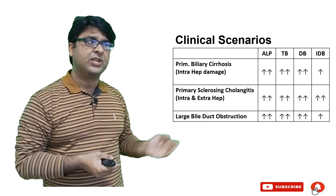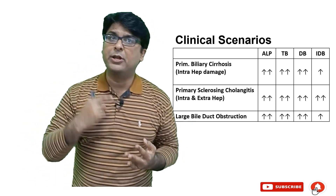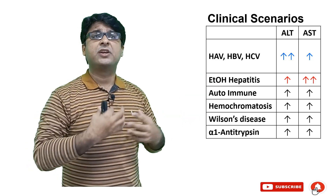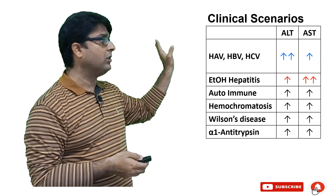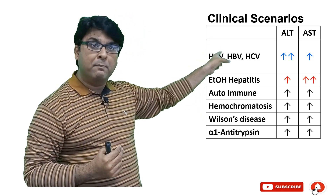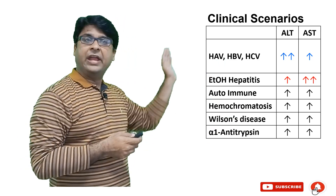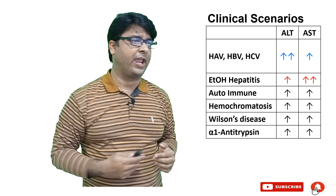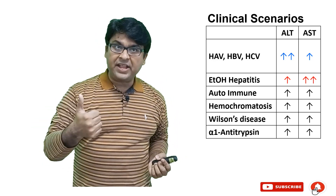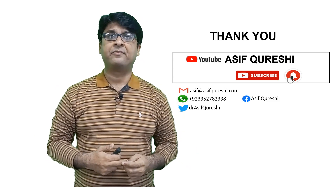In primary sclerosing cholangitis, there is blockage of both intrahepatic and extrahepatic ducts with large bile duct obstruction. Again: alkaline phosphatase will go up, total bilirubin will go up, direct bilirubin will go up, and indirect bilirubin will go up as well. For hepatocellular damage — in viral hepatitis A, B, C — ALT is a little more specific, so ALT levels rise more than AST. But in alcoholic hepatitis, AST levels rise more than ALT. In the rest of the diseases, both go equally high. So when analyzing an LFT report, separate the cholestatic markers from the damage markers and analyze them independently. Thank you very much.